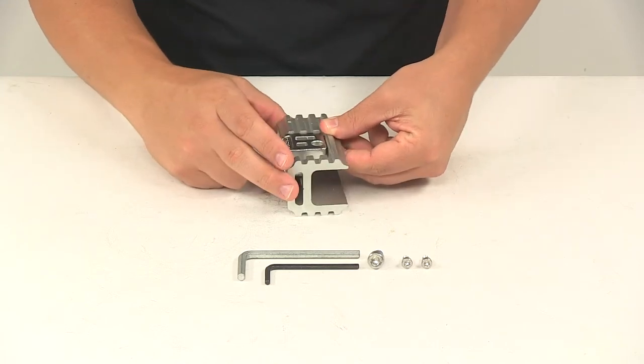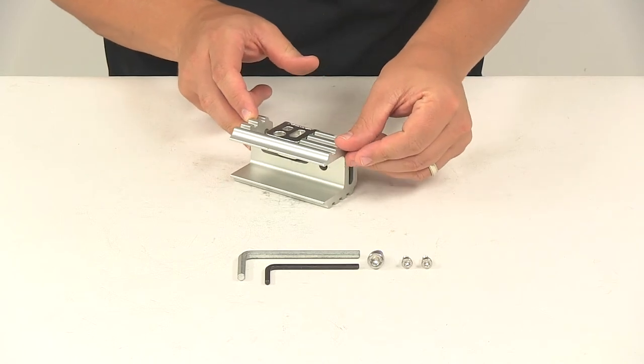That's going to do it for today's look at the two inch shank adapter for the Yakima Ridgeback or Full Tilt Bike Racks.